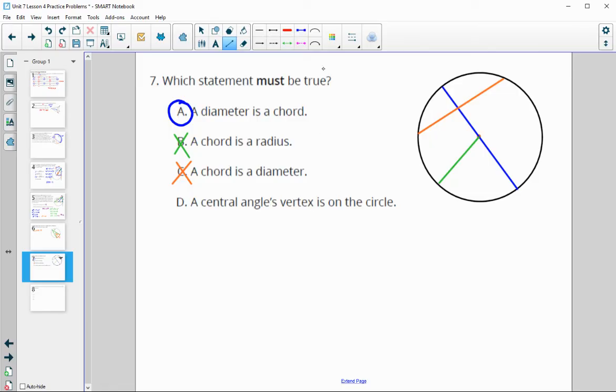A central angle's vertex is on the circle. Like we talked about in the last problem, the central angle is formed at the center. So the vertex is on the center, not on the edge.